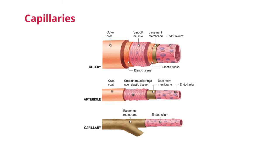Capillaries are the smallest of blood vessels, about 5 to 10 micrometers in diameter. Their primary function is to exchange substances between the blood and interstitial fluid, which is the fluid between tissues and cells. Unlike their counterparts, they are very simple.